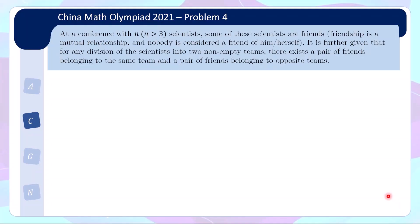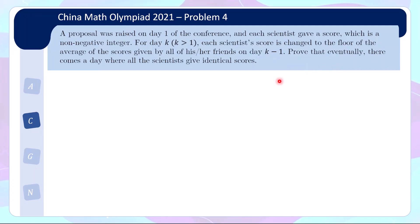The problem statement is quite long so I'll break it up into two parts. At a conference with n > 3 scientists, some of these scientists are friends. Friendship is a mutual relationship, so A friend with B means B friend with A, and nobody is considered a friend of himself or herself. It's further given that for any division of the scientists into two non-empty teams, there will always exist a pair of friends belonging to the same team and a pair of friends belonging to opposite teams.